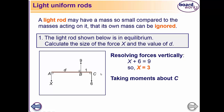Now we take moments about point C. The force at C produces zero moment, so it is ignored. The 9 N force creates a clockwise moment, and x is anticlockwise. Clockwise moment equals anticlockwise moment: 9 times 1 equals x times d. Since x equals 3, we can solve for d.